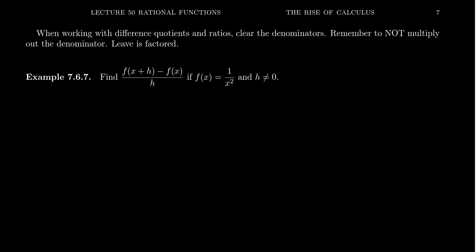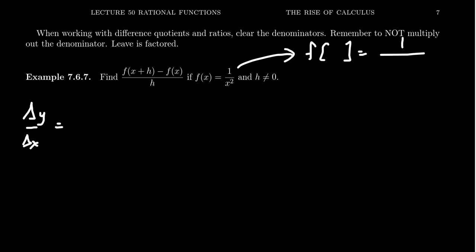So if you want to evaluate delta y over delta x, the difference quotient, one thing to remember when you have these functions: think of it not as a variable, think of it like this is just a placeholder. So we're thinking of what is f of blank — this should look like one over blank squared.